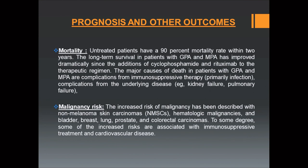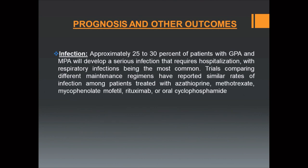Regarding prognosis, untreated patients have a 90% mortality rate within 2 years. Long-term survival in patients with ANCA-associated vasculitis has improved dramatically since the addition of cyclophosphamide and rituximab. The major causes of death are complications from immunosuppressive therapy or from the underlying disease. Malignancy risk has been described for non-melanoma skin carcinoma, hematological malignancies, and bladder, breast, lung, prostate, and colorectal carcinoma. Approximately 20 to 30% of patients develop serious infection requiring hospitalization, with respiratory tract infection being the most common. Similar infection rates are reported among patients treated with azathioprine, MTX, MMF, rituximab, or oral cyclophosphamide.